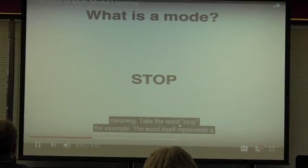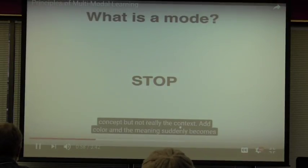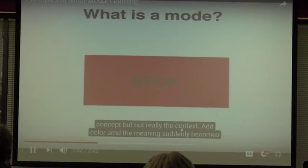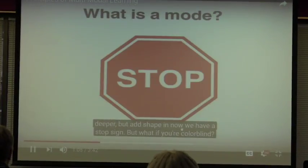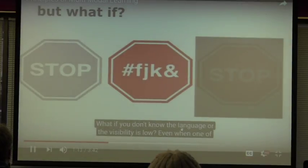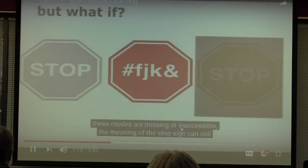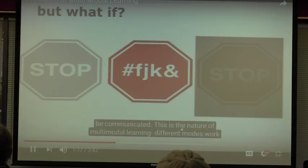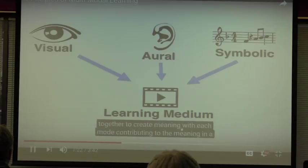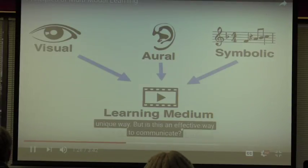What is a mode? Anything that communicates meaning. Take the word 'stop' for example. The word itself represents a concept, but not really the context. Add color, and the meaning suddenly becomes deeper. Add shape, and now we have a stop sign. But what if you're color blind? What if you don't know the language or the visibility is low? Even when one of these modes is missing or inaccessible, the meaning of the stop sign can still be communicated. This is the nature of multimodal learning — different modes work together to create meaning, with each mode contributing in a unique way.